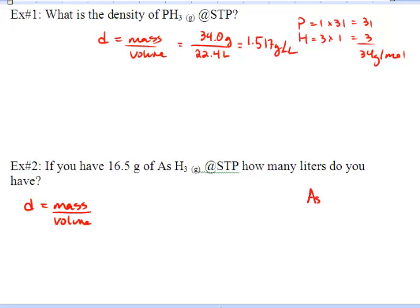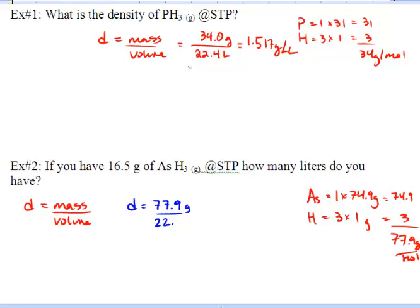So arsenic has a molar mass of 74.9 grams. And hydrogen, we have three of them and they each weigh one. We get 74.9 plus 3 and we get 77.9 grams per mole. Now this comes in handy because we know the molar mass now of AsH3. So we're going to get our density using the fact that one mole of anything occupies 22.4 liters of space at STP. So we have 77.9 grams and this occupies 22.4 liters.